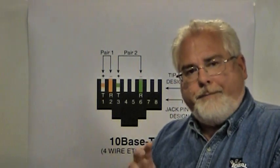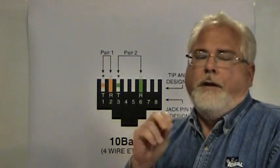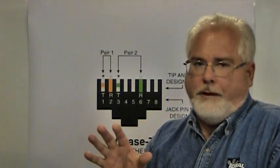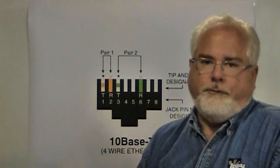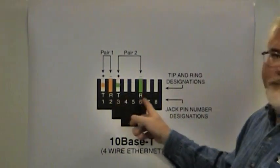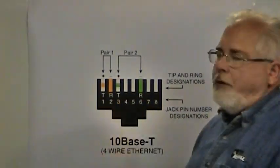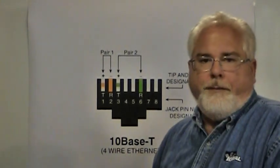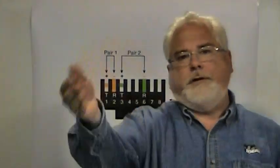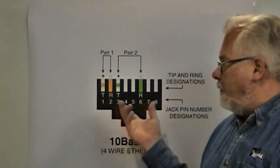Now, in 10 and 100BaseT computer networks, they actually don't use all the wires in the cable. They're only using two of the four pairs, and here's the pairs that are indicated: pins 3 and 6 make a pair, and pins 1 and 2 make a pair. Essentially, one of the pairs is a transmit pair where we're sending information out to another device. The other pair is our receive pair that we're bringing information back from that device.